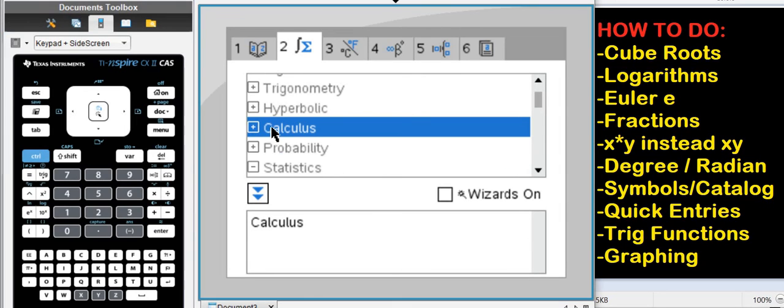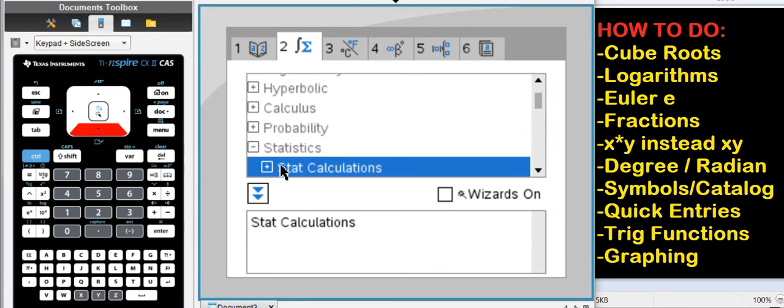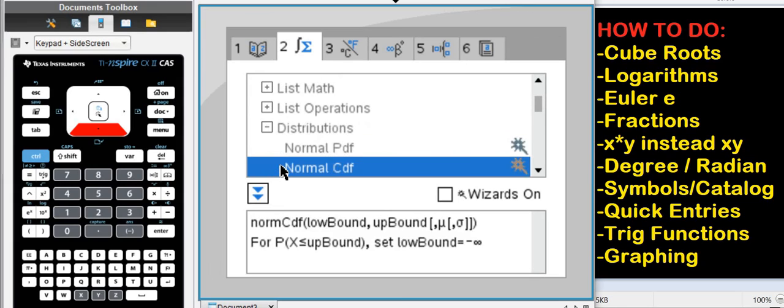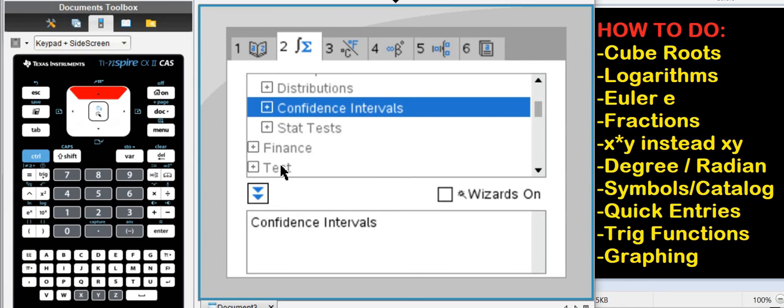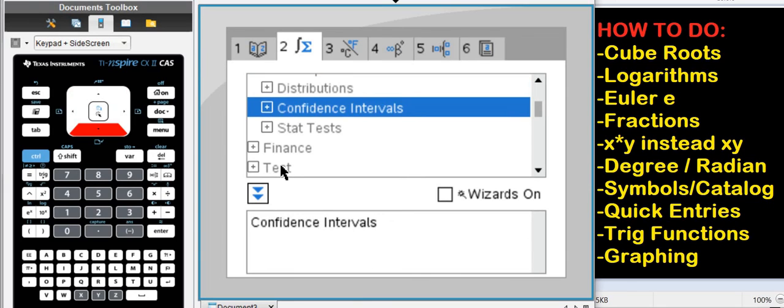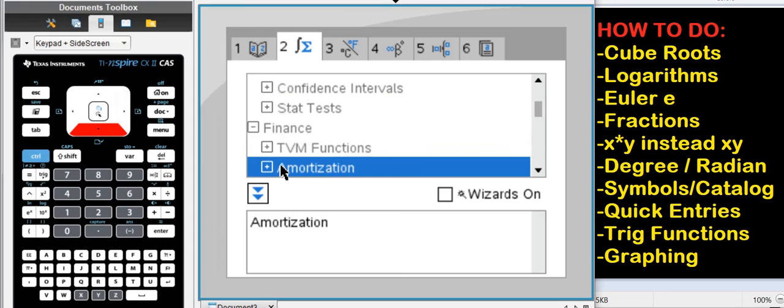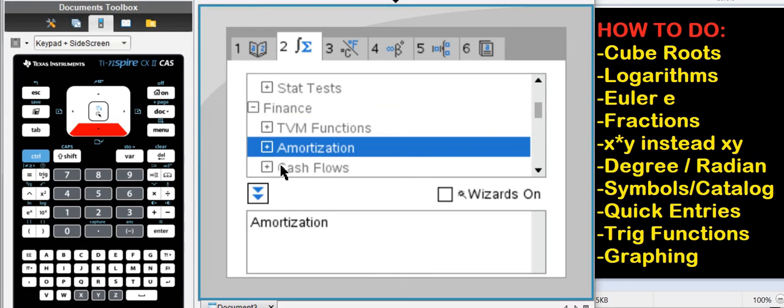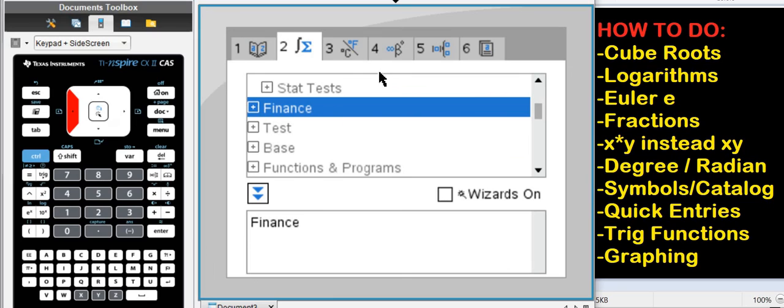But I'm not done yet here in the catalog. So here's the commands for calculus. Here's everything for statistics. I mean, for that, you can really spend a day and look through all the options there. Finances, tests, finances, time value, amortization, cash flow. So everything right here.